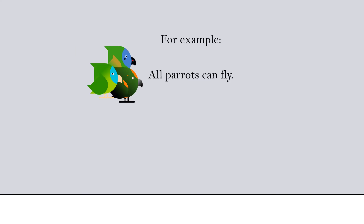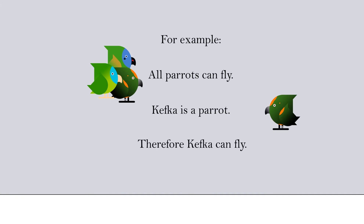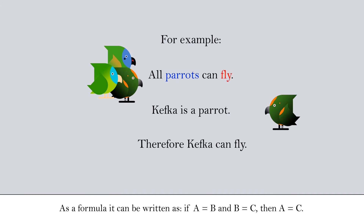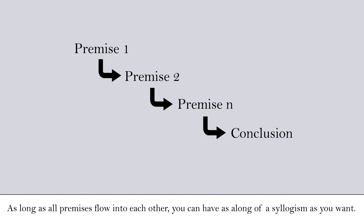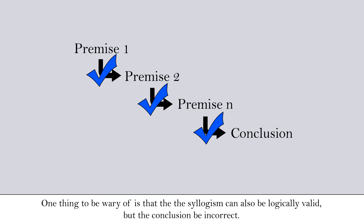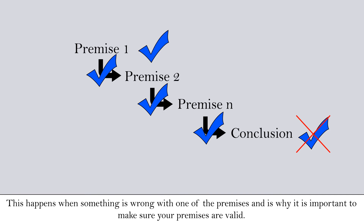These premises are asserted or assumed to be true and must be true in order for the conclusion to be valid. For example: all parrots can fly; Kefka is a parrot; therefore, Kefka can fly. As a formula, it can be written as: if A equals B and B equals C, then A equals C. As long as all premises flow into each other, you can have as long a syllogism as you want. One thing to be wary of is that the syllogism can also be logically valid but the conclusion be incorrect. This happens when something is wrong with one of the premises, and is why it is important to make sure your premises are valid.